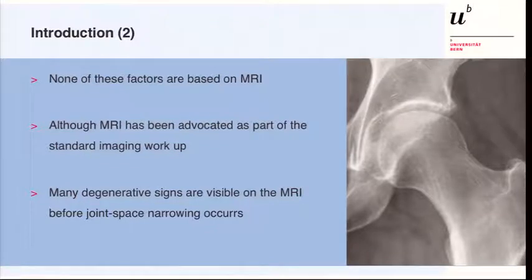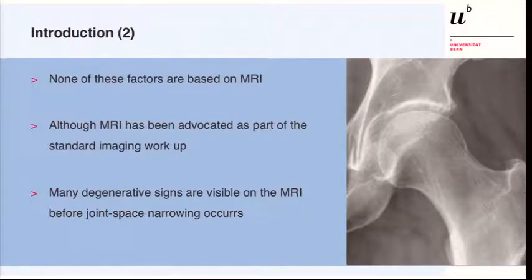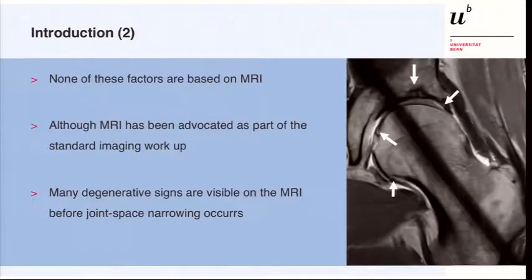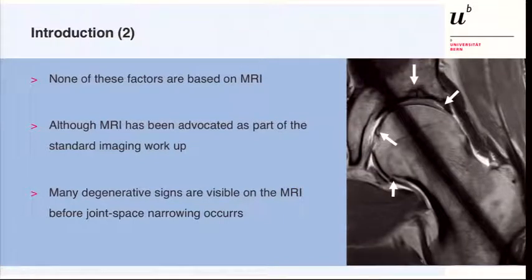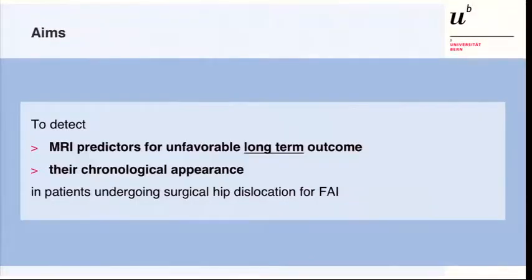Many degenerative signs are visible on MRI before joint space narrowing occurs. On the conventional radiograph you can see a kind of irregular joint space, but not much osteoarthritis. On the MRI, however, it is very clearly visible — degenerative signs including acetabular cysts, chondral lesions, perifoveal osteophyte formation, and posterior inferior changes. We see much more on MRI preoperatively, particularly if you rotate the cuts along the femoral neck axis.